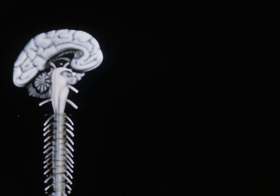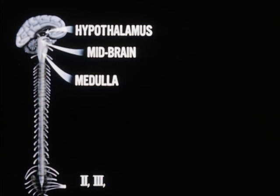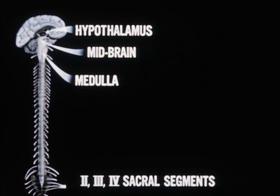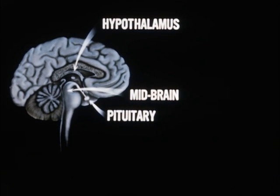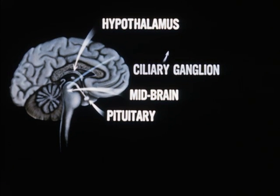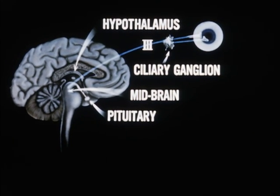The second subdivision of the autonomic nervous system is known as the parasympathetic system. Preganglionic fibers of this subdivision leave the central nervous system from the hypothalamus, the midbrain, the medulla, or the second, third, and fourth sacral segments of the spinal cord. Those from the hypothalamus innervate the secretory glands of the posterior lobe of the pituitary. Those leaving the midbrain travel to the ciliary ganglion where they synapse with postganglionic fibers providing parasympathetic innervation to the eye.